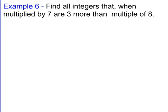Okay, it says find all the integers that when multiplied by 7 are 3 more than a multiple of 8. Well, that means you want a number times 7. So 7x is equal to 3 more than a multiple of 8 is just 3 mod 8.